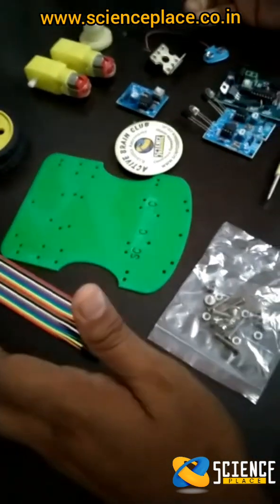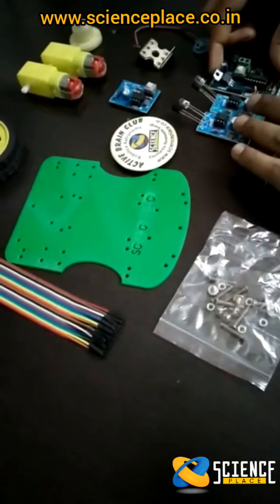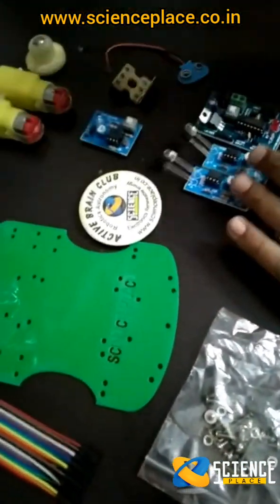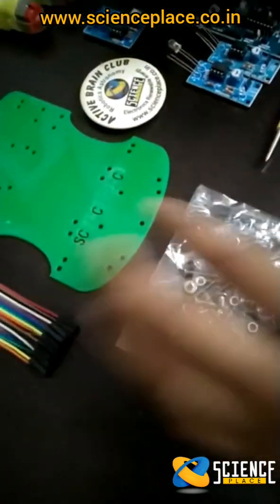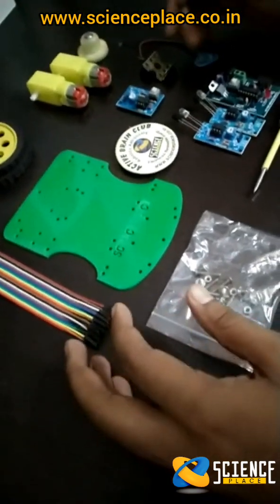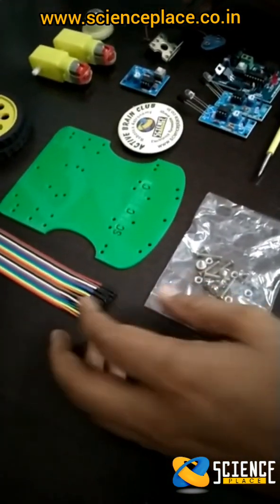Details you can find in the description like LFR, obstacle avoider, LDR module sensors, edge detectors, all of that we can make. So let's see what are the components we have in the kit.